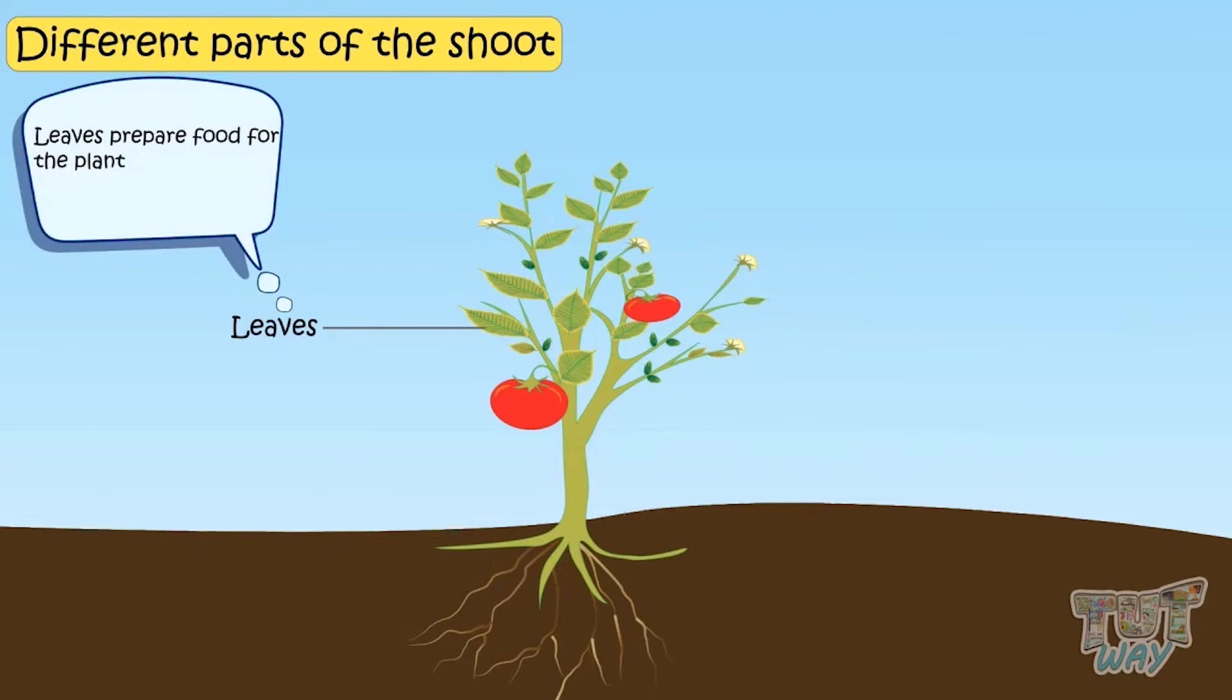Leaves prepare food for the plant with a process of photosynthesis and leaves are also called the food factory of plants.